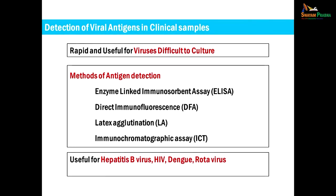The third method of direct demonstration is antigen detection. This method is very useful for viruses that are very difficult to grow in culture and is also a rapid method. Various methods of antigen detection are available: serological techniques like enzyme-linked immunosorbent assays (ELISA), direct immunofluorescence test, latex agglutination test, and various immunochromatographic assays.